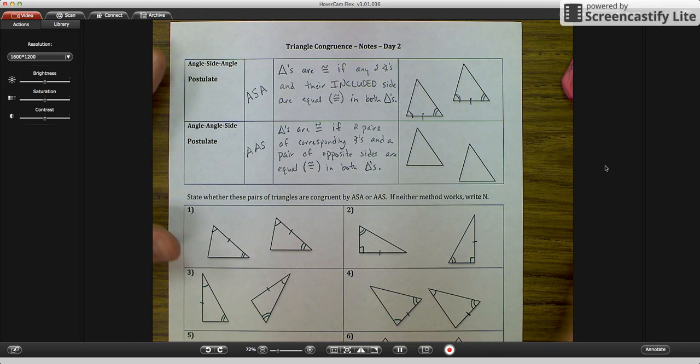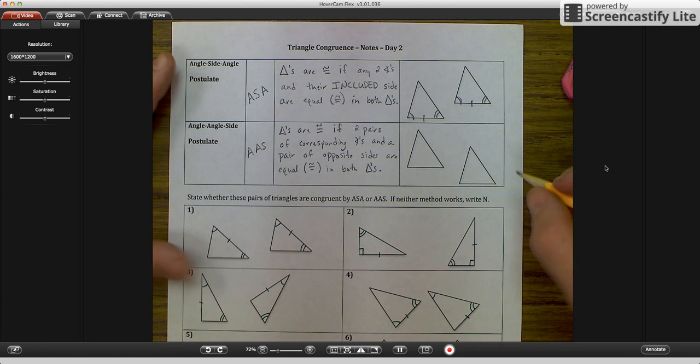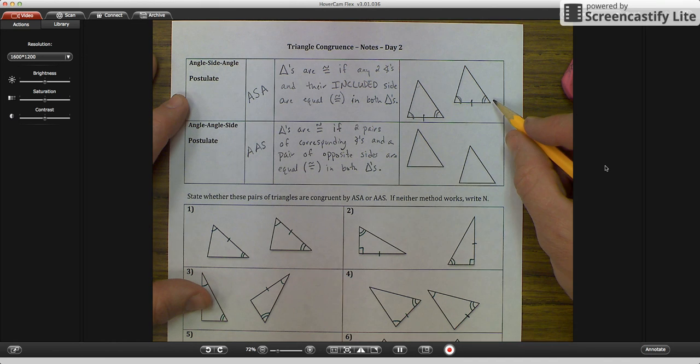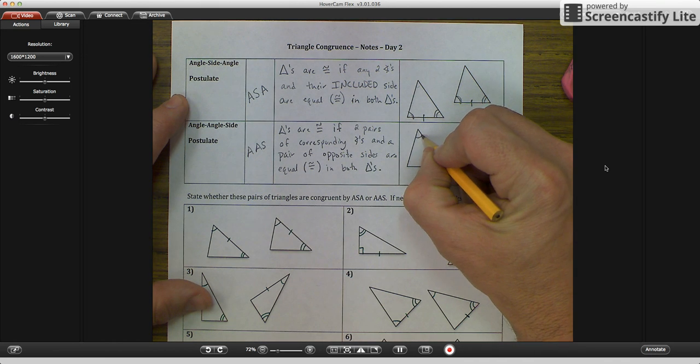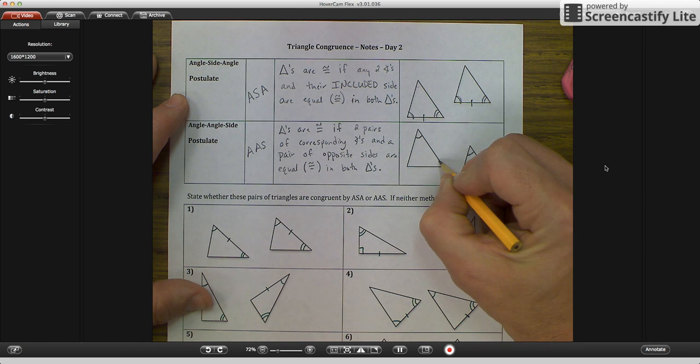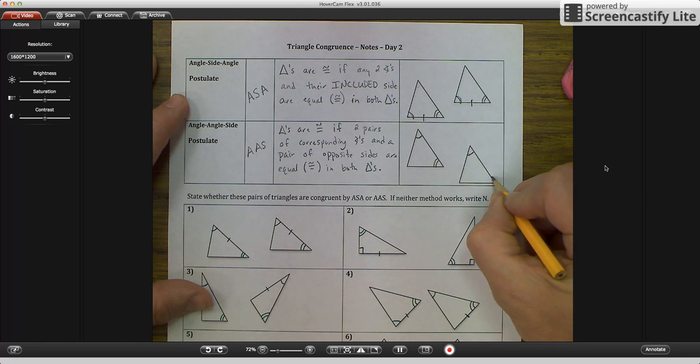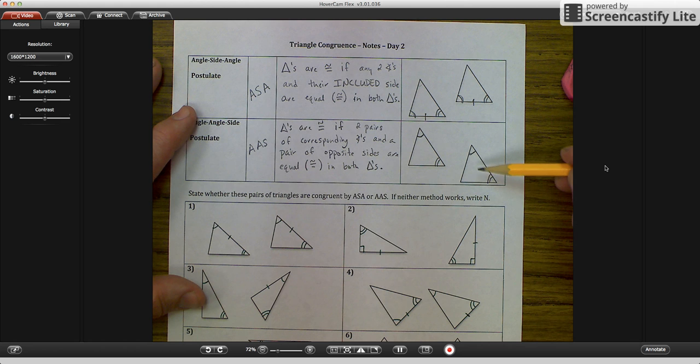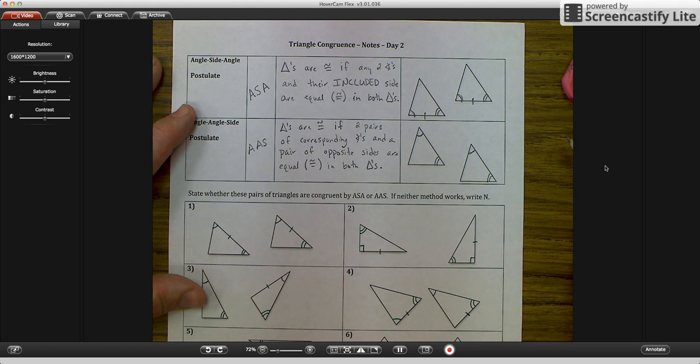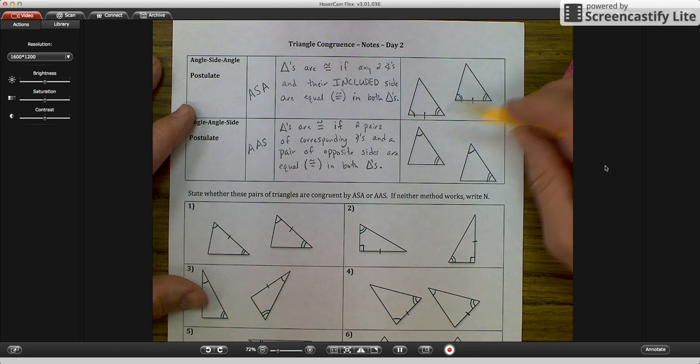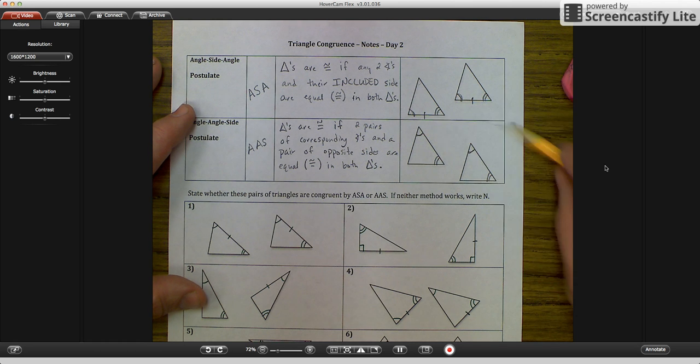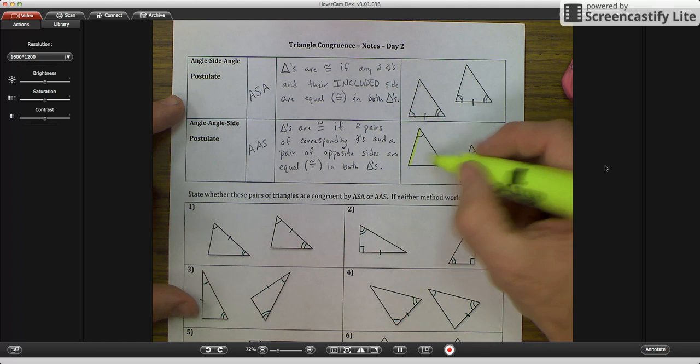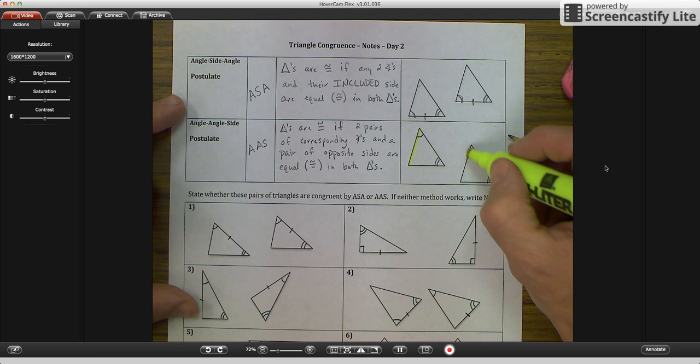Okay, so again, let's come over to our images over here, and we can pick any two angles. So I'm going to pick some different angles for angle, angle, side than I did for angle, side, angle. I'm going to pick the top angle and the bottom right angle, because it says two pairs of corresponding angles. So we have our two pairs of corresponding angles and a pair of opposite sides. So what sides are opposite of these angles? You actually have two options. You have the yellow option. This is a side that is opposite the two angles.